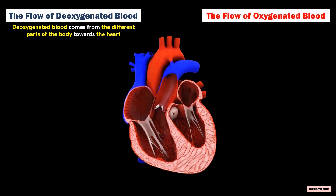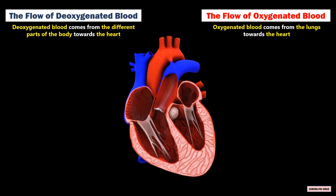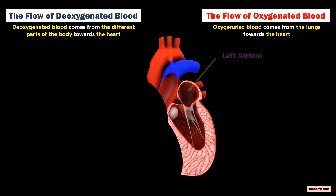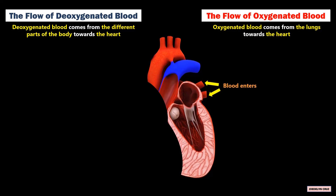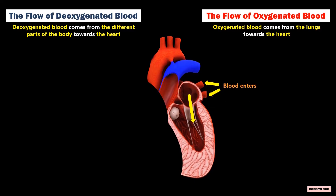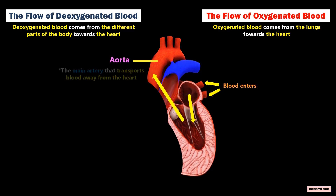Oxygenated blood comes from the lungs towards the heart. The left atrium receives the oxygenated blood from the lungs via the pulmonary vein. The blood then moves to the left ventricle through the mitral valve, and then to the aorta through the aortic valve. The aorta is the main artery that transports blood away from the heart.